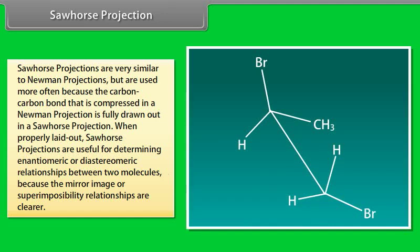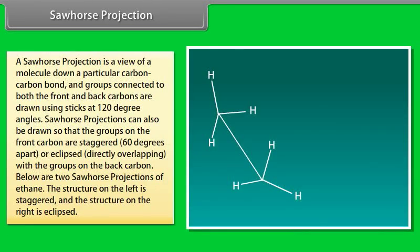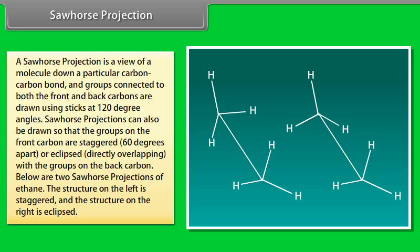Sawhorse projections are very similar to Newman projections but are used more often because the carbon-carbon bond that is compressed in a Newman projection is fully drawn out in a sawhorse projection. When properly laid out, sawhorse projections are useful for determining enantiomeric and diastereomeric relationships between two molecules because the mirror image or superimposability relationships are clearer. Like with the Newman projections, a sawhorse projection is a view of a molecule down a particular carbon-carbon bond, and groups connected to both the front and back carbons are drawn using sticks at 120-degree angles. Sawhorse projections can also be drawn so that the groups on the front carbon are staggered 60 degrees apart or eclipsed, directly overlapping with the groups on the back carbon. Below are two sawhorse projections of ethane: the structure on the left is staggered and the structure on the right is eclipsed.